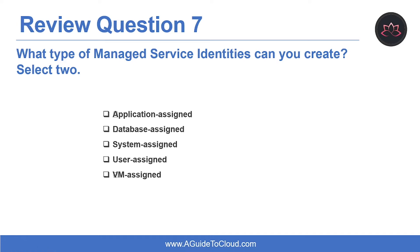Question seven: what types of managed service identities can you create? Select two. The correct answers are system-assigned and user-assigned. A system-assigned managed identity is enabled directly on an Azure service instance, and Azure creates an identity for the instance in the Azure AD tenant trusted by the subscription. Creating an app with a user-assigned identity requires creating the identity and then adding its resource identifier to your app configuration.